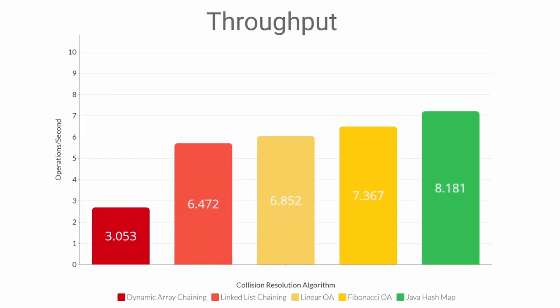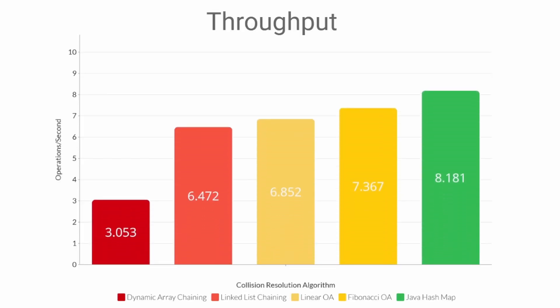The first thing I calculated was the throughput — the number of operations per second — of each of these algorithms. Java's HashMap implementation actually performed the best, followed by Fibonacci open addressing, then linear open addressing, and linked-list chaining. Those three were all fairly close to each other, but by far the worst performer was the dynamic array.